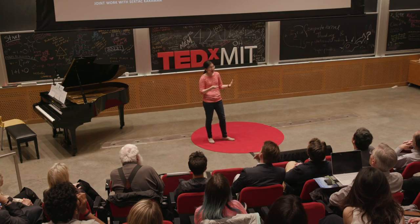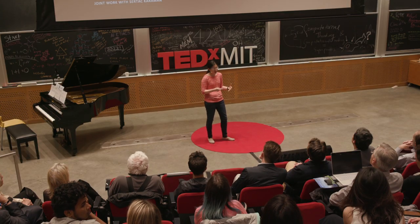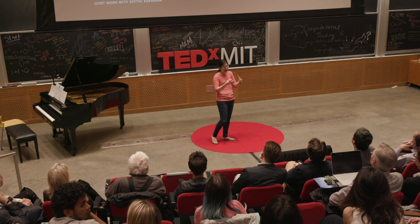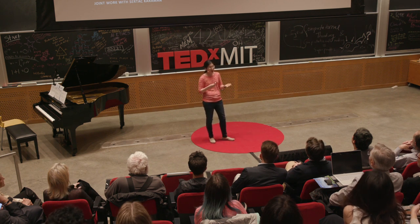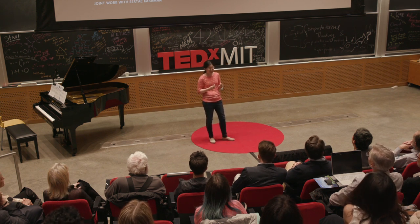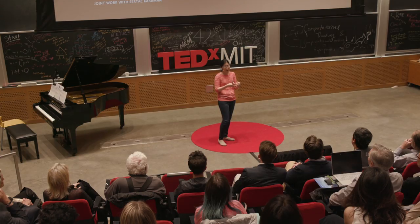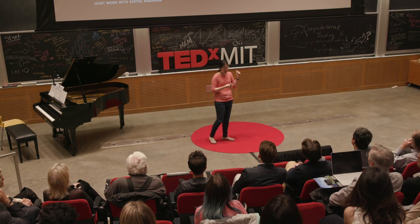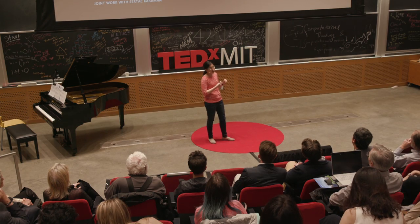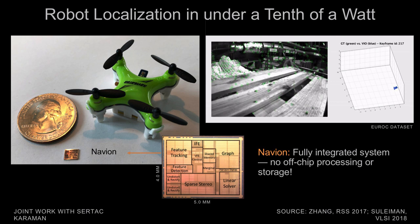A key idea enabling this energy efficiency is integrating everything on chip, minimizing expensive off-chip data movement. We also apply compression techniques to reduce on-chip storage to under a megabyte of data. This chip is only 4 millimeters by 5 millimeters — 20 square millimeters — as you can see in the figure.